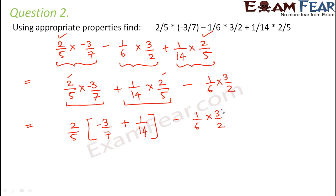So here we get 2 by 5 into this would be minus 6 plus 1 divided by 14 minus 1 by 4. So this would be equal to 2 by 5 into minus 5 by 14. So 5 and 5 will cancel out, 2 times 7 is 14, minus 1 by 4.